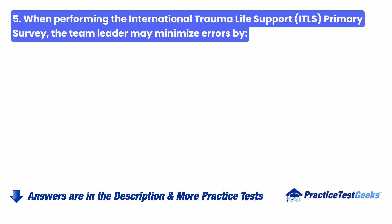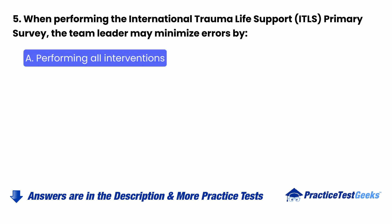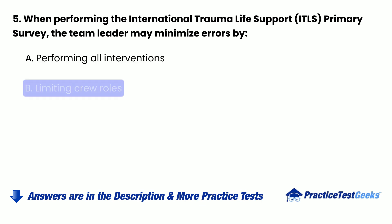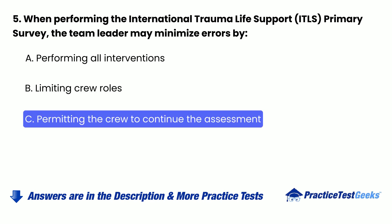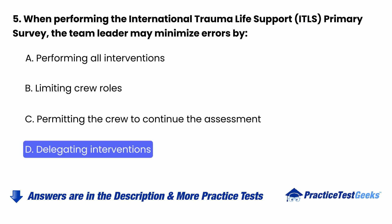Question 5: When performing the International Trauma Life Support (ITLS) primary survey, the team leader may minimize errors by: A. Performing all interventions. B. Limiting crew roles. C. Permitting the crew to continue the assessment. D. Delegating interventions.